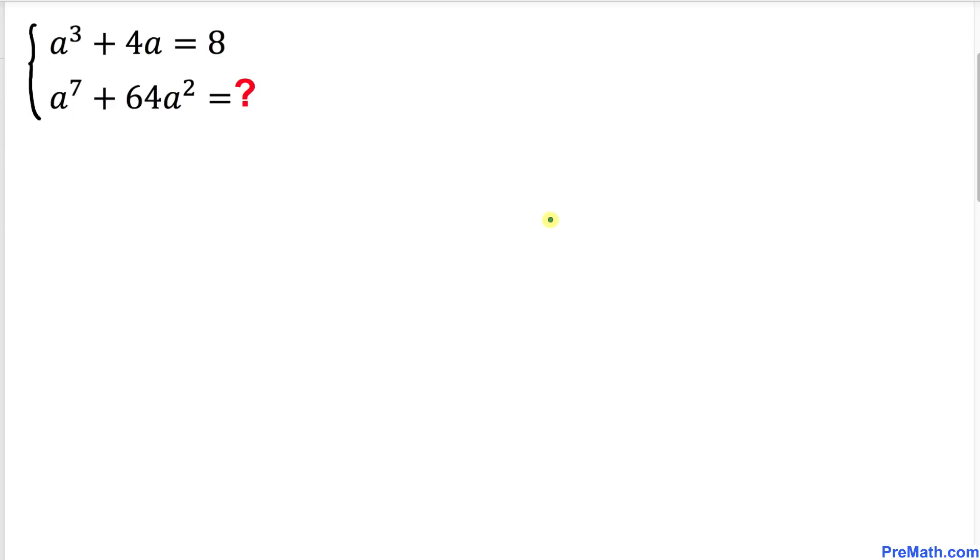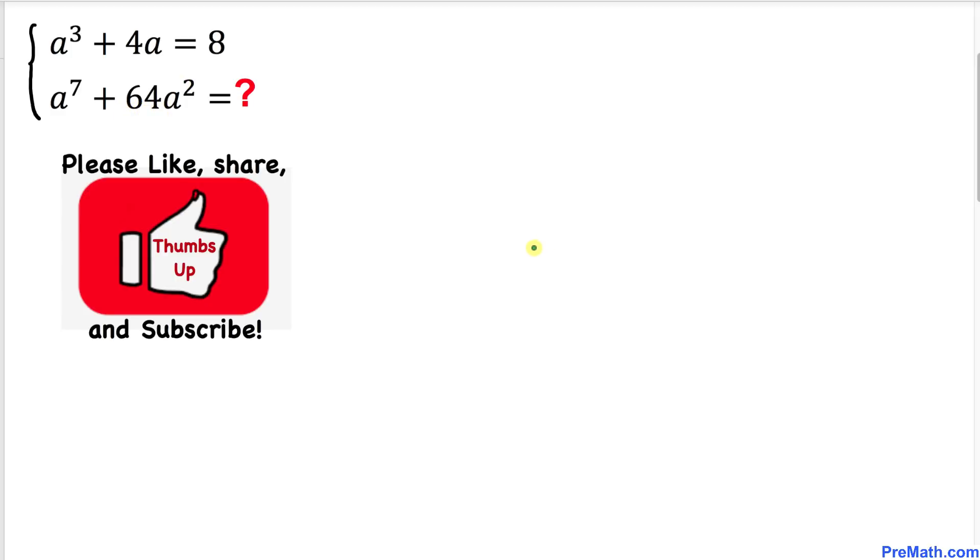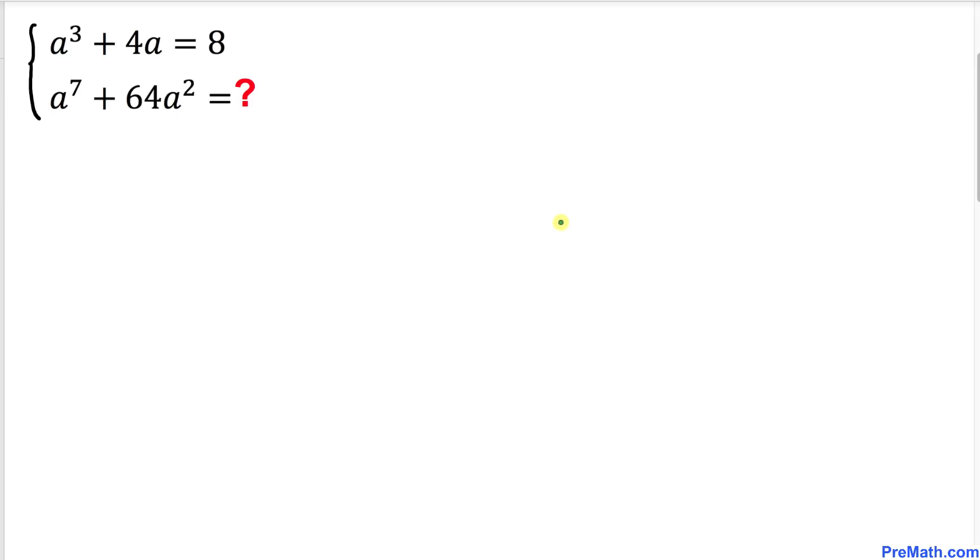Welcome to PreMath. In this video tutorial, we are going to solve this given system: a³ + 4a = 8, then we are going to find the value of a⁷ + 64a². Please don't forget to give a thumbs up to this video, so let's go ahead and get started with the solution.